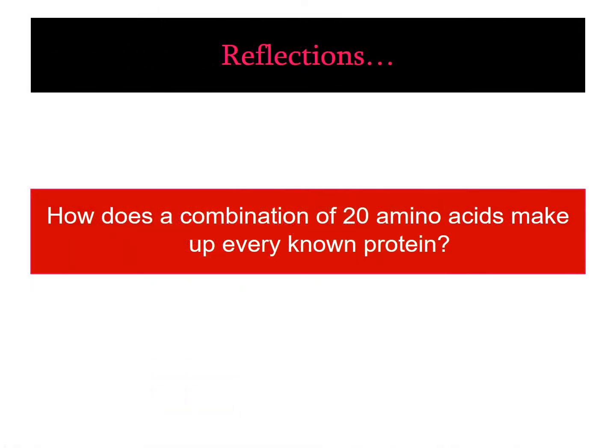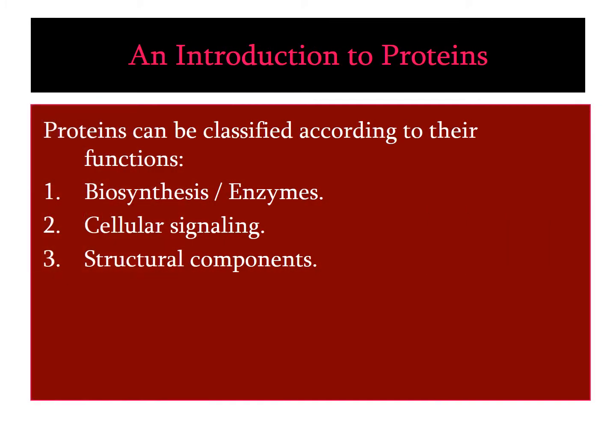What we need to reflect upon is how does a combination of 20 amino acids make up every known protein? Proteins can be classified according to their function. Some proteins are involved in biosynthesis and are enzymes which catalyze biochemical reactions. Other classes of proteins are involved in cellular signaling as well as in structural components which comprise the human body as well as cells.